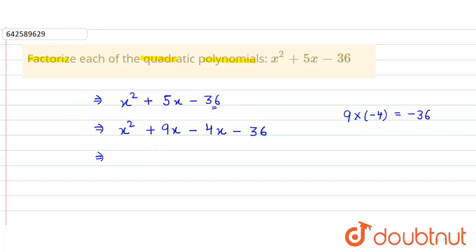Now we simply solve it. First, take x common from these two expressions. So it is x(x + 9). Similarly, take -4 common from the remaining two terms. So it is -4(x + 9).